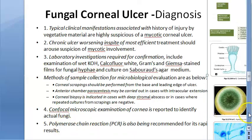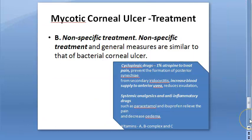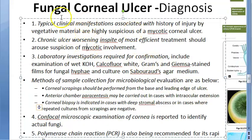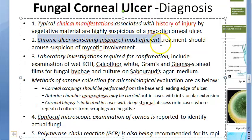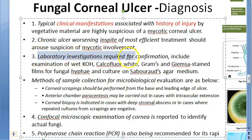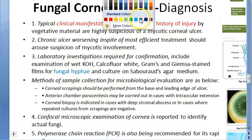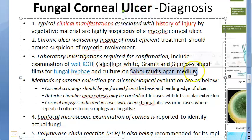For diagnosis, use clinical manifestations along with history of injury. A chronic ulcer worsening despite treatment should raise suspicion of mycotic involvement. Laboratory investigations include KOH wet mount, Gram and Giemsa stained films for fungal hyphae, and Calcofluor white staining. Culture is done on Sabouraud dextrose agar.